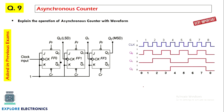Asynchronous counter: in the textbook it is given for 3 bits. Since it is asynchronous, the clock is not given to all flip-flops simultaneously. The clock is given only to the first flip-flop; the output of the first flip-flop becomes the clock for the second flip-flop, and the output of the second becomes the clock for the third. Outputs Q0, Q1, Q2 are taken accordingly. This is also an important question we can expect.